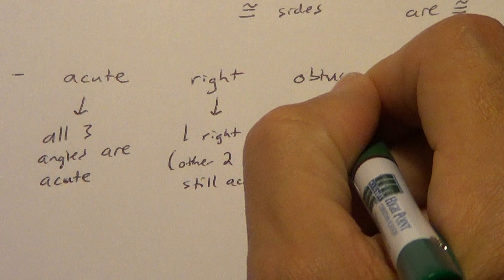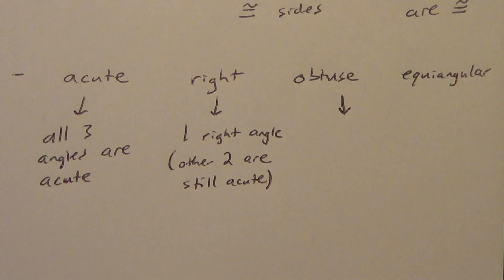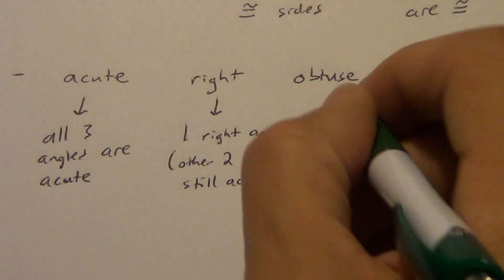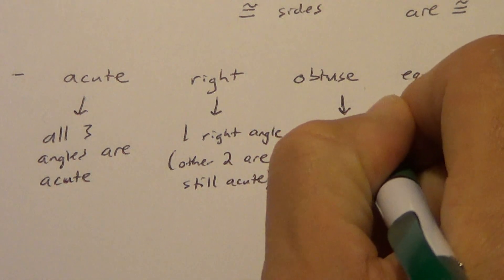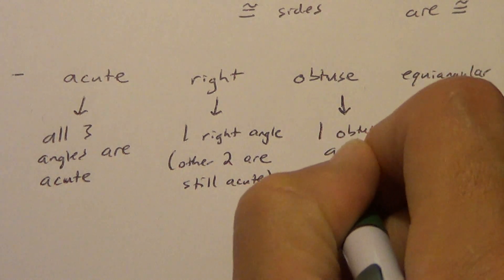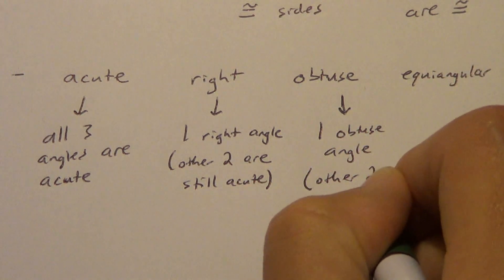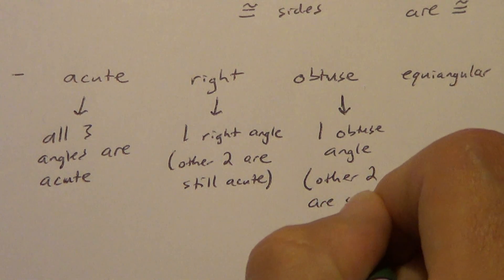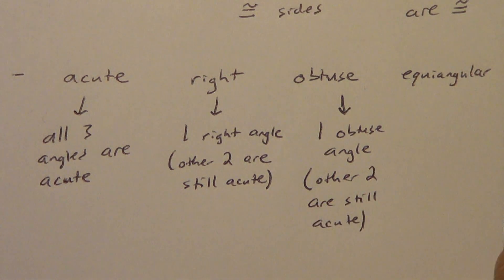Okay. An obtuse triangle. Just like a right triangle, it's not going to be all three obtuse angles. It's actually impossible to draw in planar geometry. You might be able to do something a little bit different if you get into spherical geometry. But in planar geometry, you can only have one obtuse angle, which means the other two are still acute.